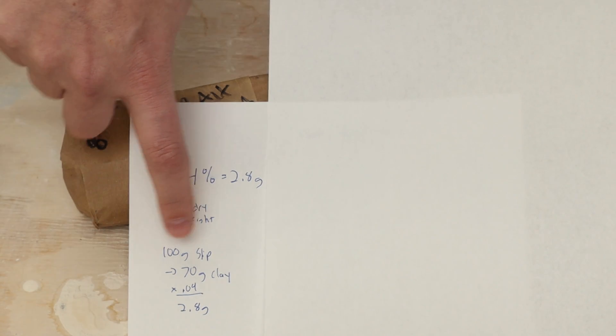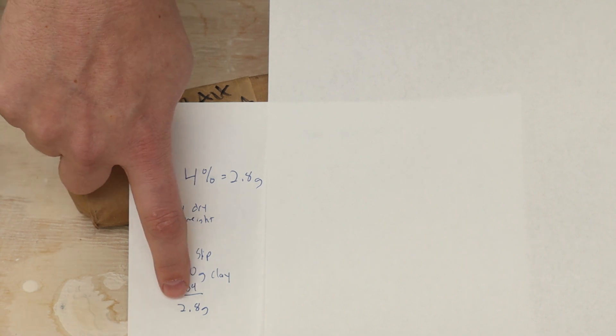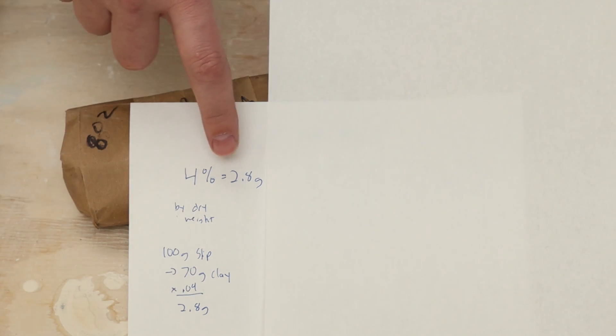My test tile molds hold 100 grams of wet slip. That's about 70 grams of dry clay. Times the 0.04 we get 2.8 grams. So I need 2.8 grams of additives to get a 4% by weight addition.